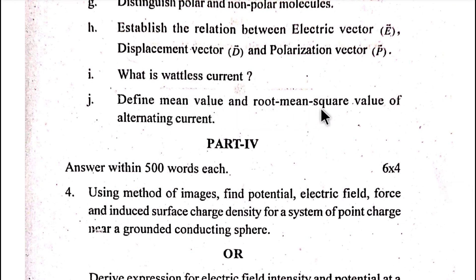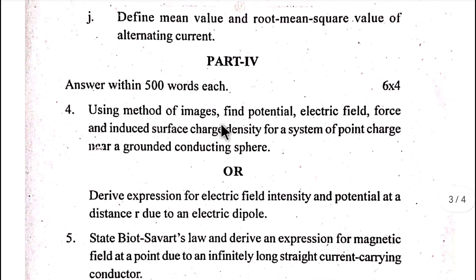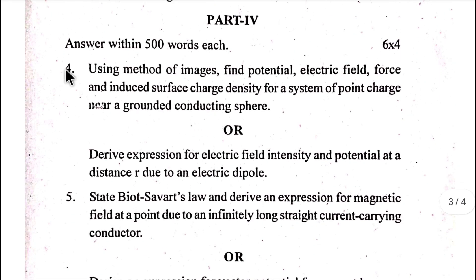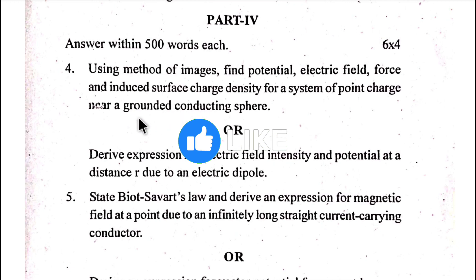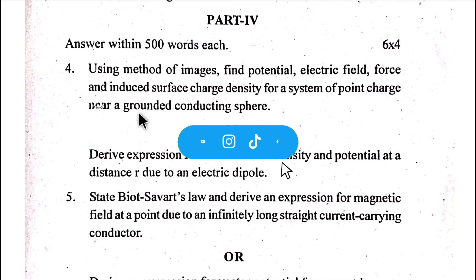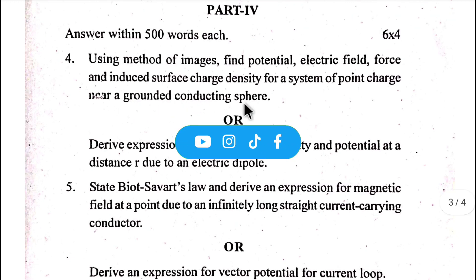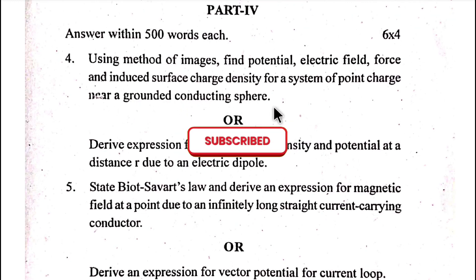What is wattless current? Define mean value and root mean square value of alternating current. Number four: Using the method of images, find potential, electric field, force, and induced surface charge density for a system of a point charge near a grounded conducting sphere.